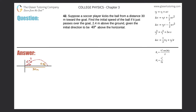Number 42. Suppose a soccer player kicks the ball from a distance of 30 meters toward the goal. Find the initial speed of the ball if it just passes over the goal 2.4 meters above the ground, given the initial direction to be 40 degrees above the horizontal.